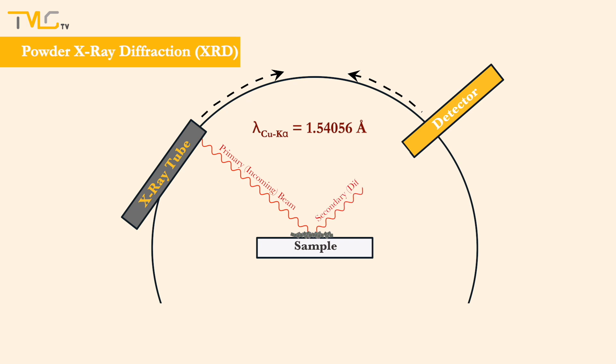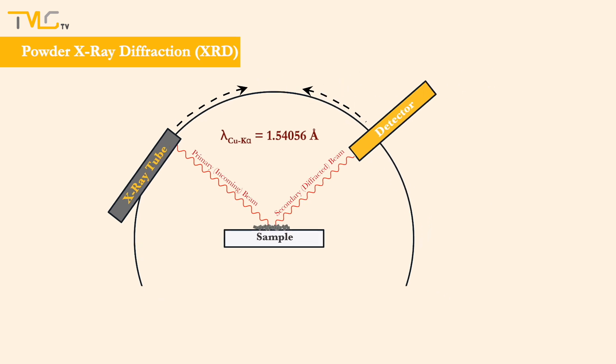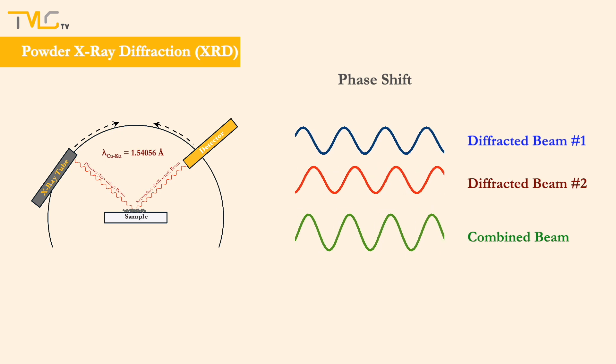The X-rays in the primary beam will be in phase. However, after diffraction, there will be some phase shift occurring between the diffracted beams, also known as secondary beams. Depending on the magnitude of these phase shifts, constructive or destructive interference can be observed.